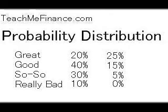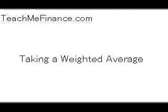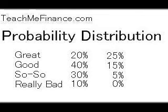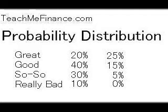The question is: what's the most likely return on your investment? To do this, you just take a weighted average. By taking a weighted average, you can determine the ERR, or expected rate of return. You just multiply the numbers across — you take the probability times the outcome, and that equals the result — then you add up the results.